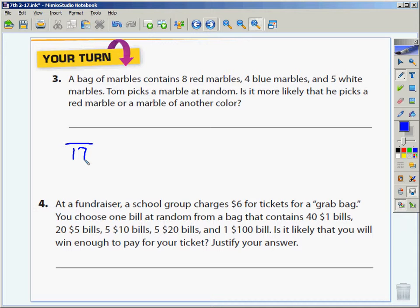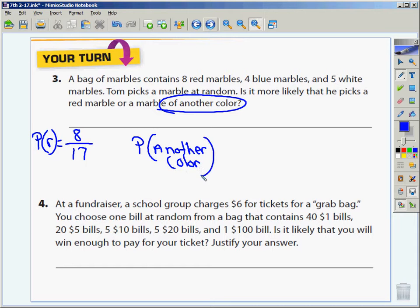Now what is the probability then of getting red? Eight out of seventeen. Notice what it says. Or the probability of another color. In other words, the probability of not red. If I'm talking about the probability of another color, seventeen minus eight would be nine. Or you're right, I could have added the four and the five together. Which one's more likely to take place? Another color is more likely.